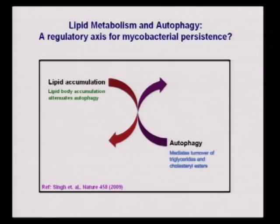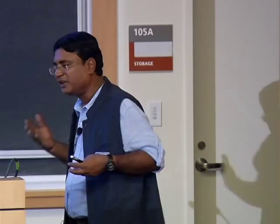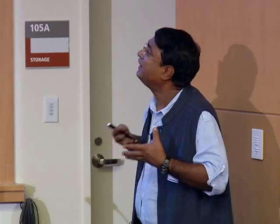A group recently studying hepatocytes discovered that basal autophagy — the low level of autophagy present in all cells even without stress — is very important for turnover of lipids, particularly triglycerides and cholesterol esters. It maintains homeostasis of these lipids inside the cell. Conversely, if there is an accumulation of lipids in the host cell, you actually see inhibition of the autophagic pathways. This indicates a regulatory link between lipid turnover and autophagy.